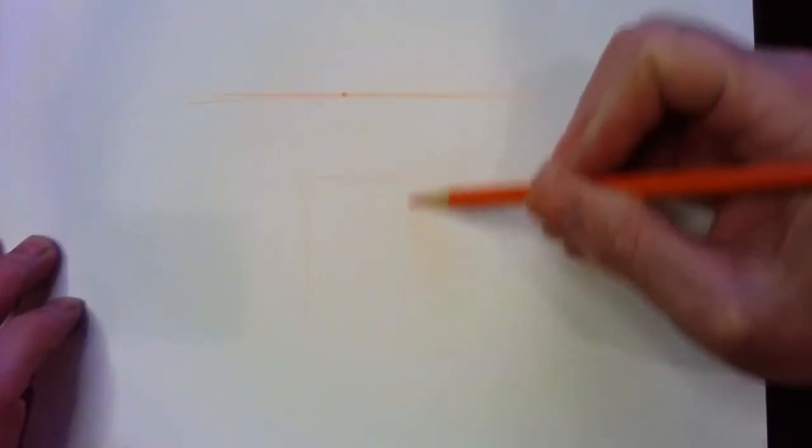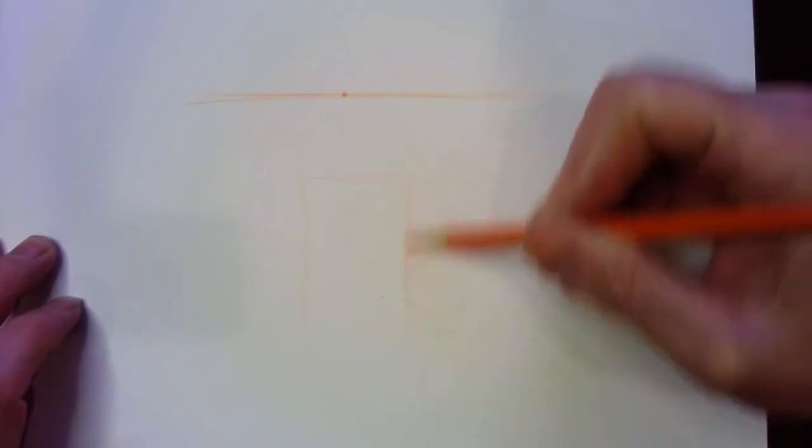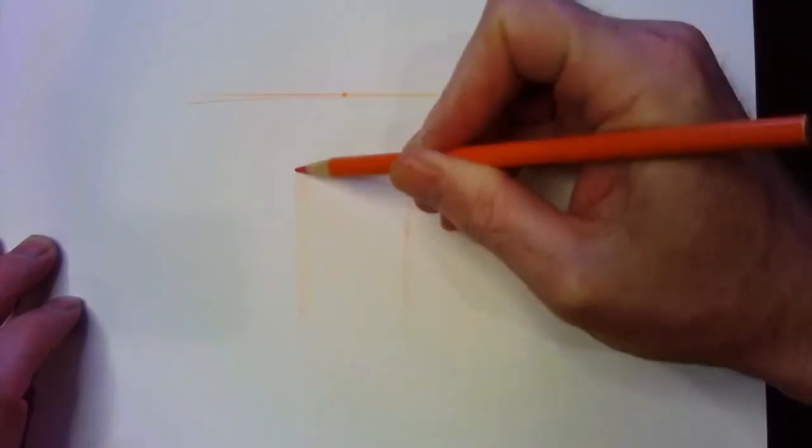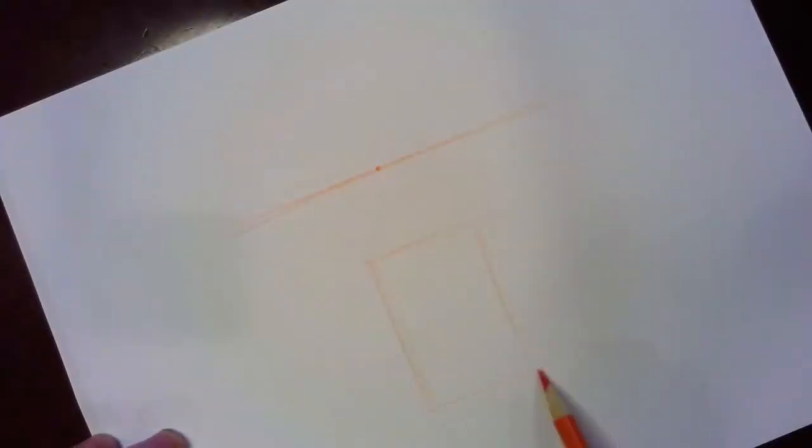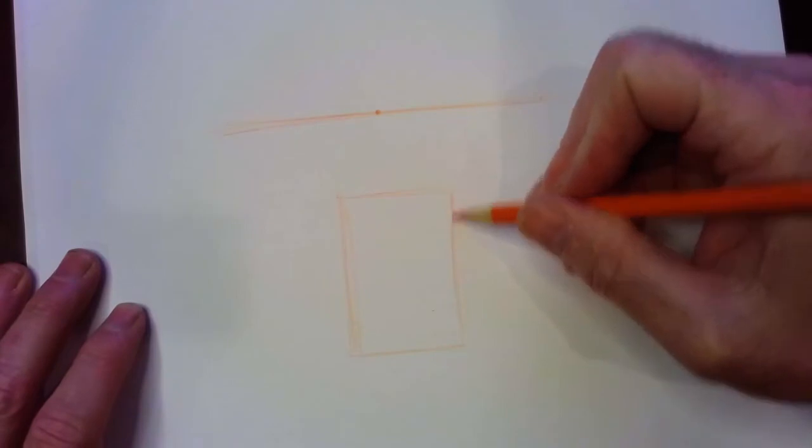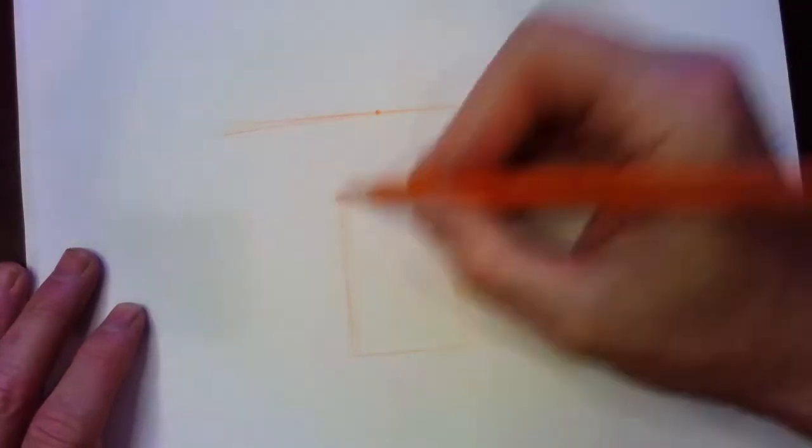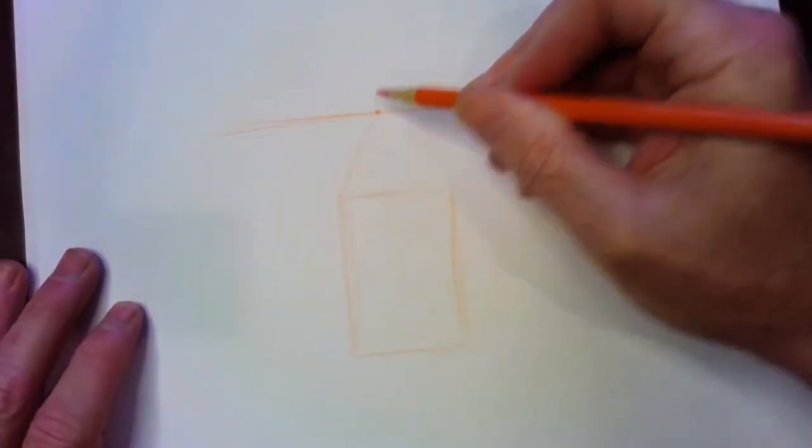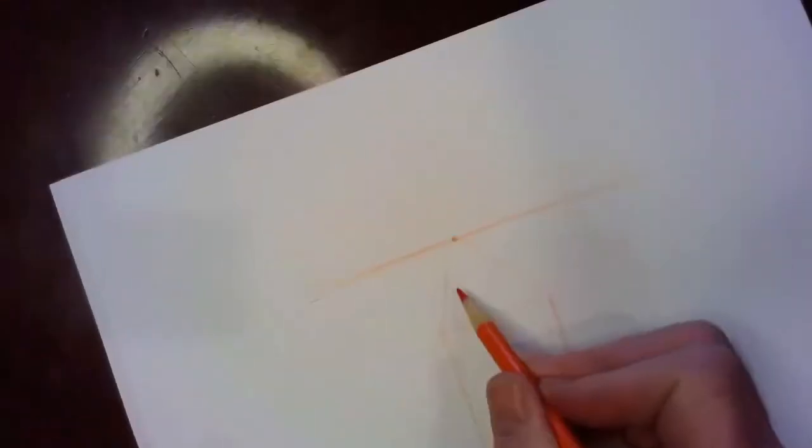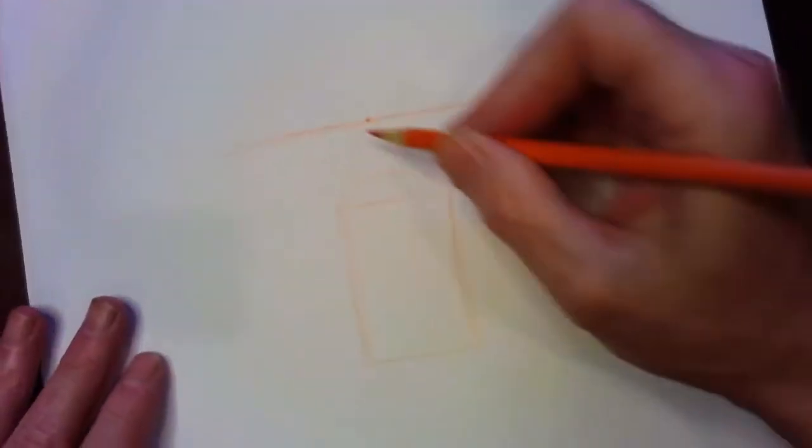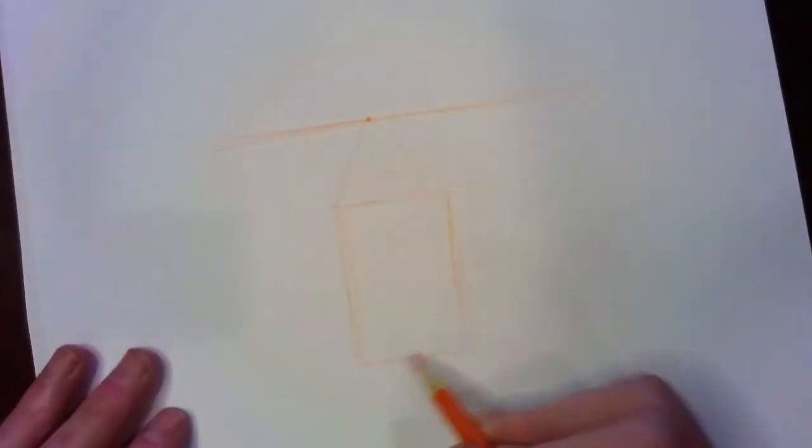And so I'm going to draw the outline of a cube. So we have basically a cube here, and it goes back to that vanishing point. It has a certain depth to it. The same thing with the bottom as well.